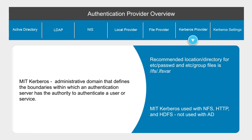Kerberos is widely used over non-secure networks. Microsoft Active Directory and MIT Kerberos are two primary implementations. Kerberos is an integrated part of Active Directory. Authentication in Active Directory is relative to the domain, and authentication with MIT Kerberos is relative to the realm.